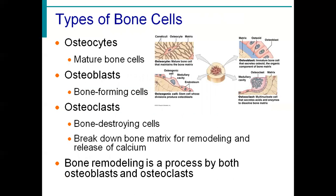The next topic is the types of bone cells. Bone is composed of generally three types of cells: number one, osteocyte; number two, osteoblast; and number three, osteoclast. Another type of cell is also present during fetal development, called the osteogenic cell. These are mainly immature mesodermal cells which are converted into bone-forming cells.